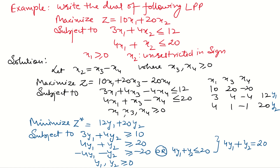Always remember: when in a question some variables are unrestricted in sign, then in the answer we have one equality constraint. But whenever we have an equality in a question, in the answer one variable is unrestricted in sign.